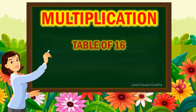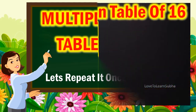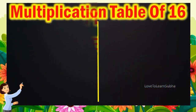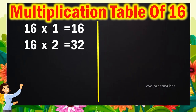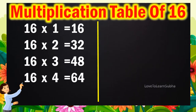Now let's repeat it once again. 16 ones are 16, 16 twos are 32, 16 threes are 48, 16 fours are 64, 16 fives are 80,